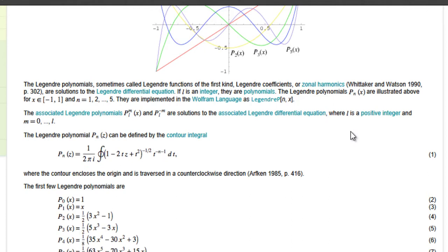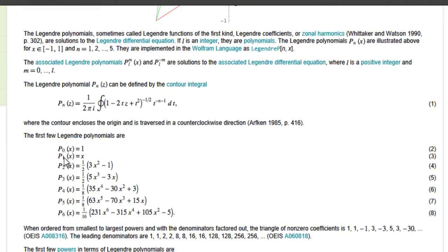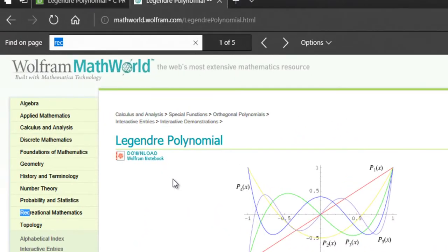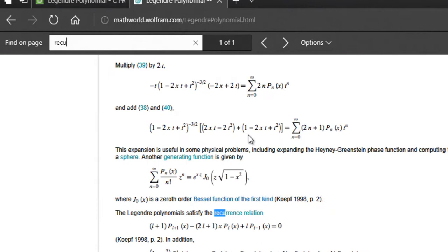There is certain information that we need to write such a program. First of all, we need to find out the first few Legendre polynomials. Here on the Wolfram page we have that information: P0 equals 1 and P1 of x equals x. We will be needing this information about the first two Legendre polynomials.